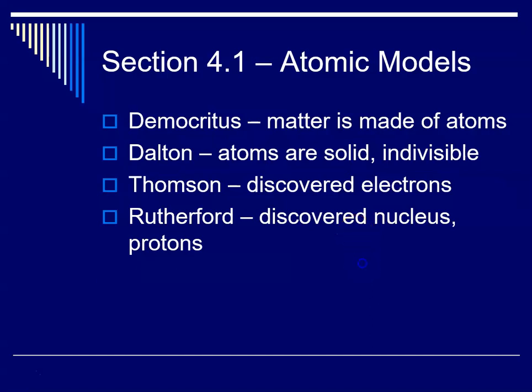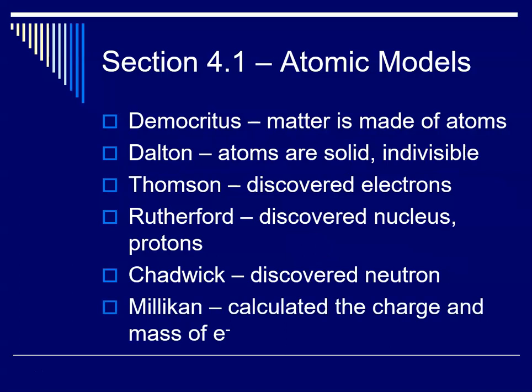These guys were no slouches. So Chadwick discovered the neutron and he received a Nobel Prize in 1935 and Millikan who calculated the charge and mass of the electron also won a Nobel Prize in 1923.